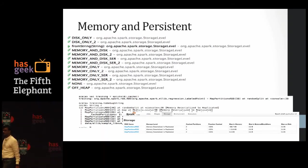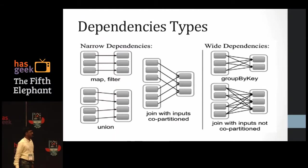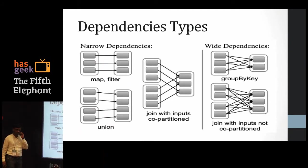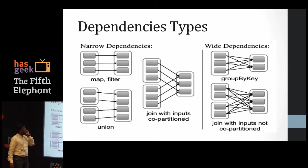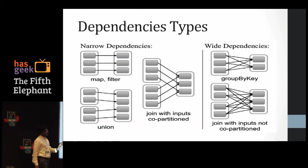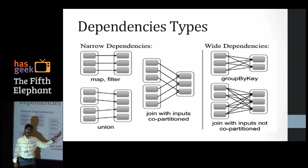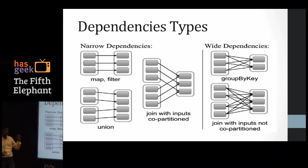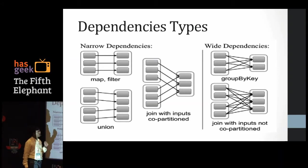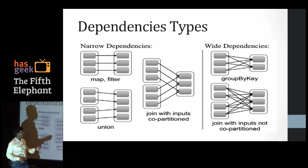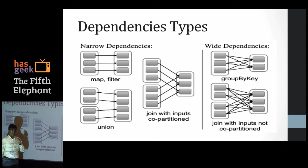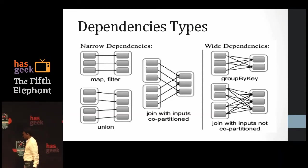There are two types of RDD dependencies: narrow and wide. In narrow dependencies, a parent RDD transfers data to only one child RDD — operations like map are narrow. Wide dependencies, like groupByKey, require shuffles among all nodes — all information is gathered and shuffled. This distinction is very important for the DAG scheduler's optimization of stage scheduling.